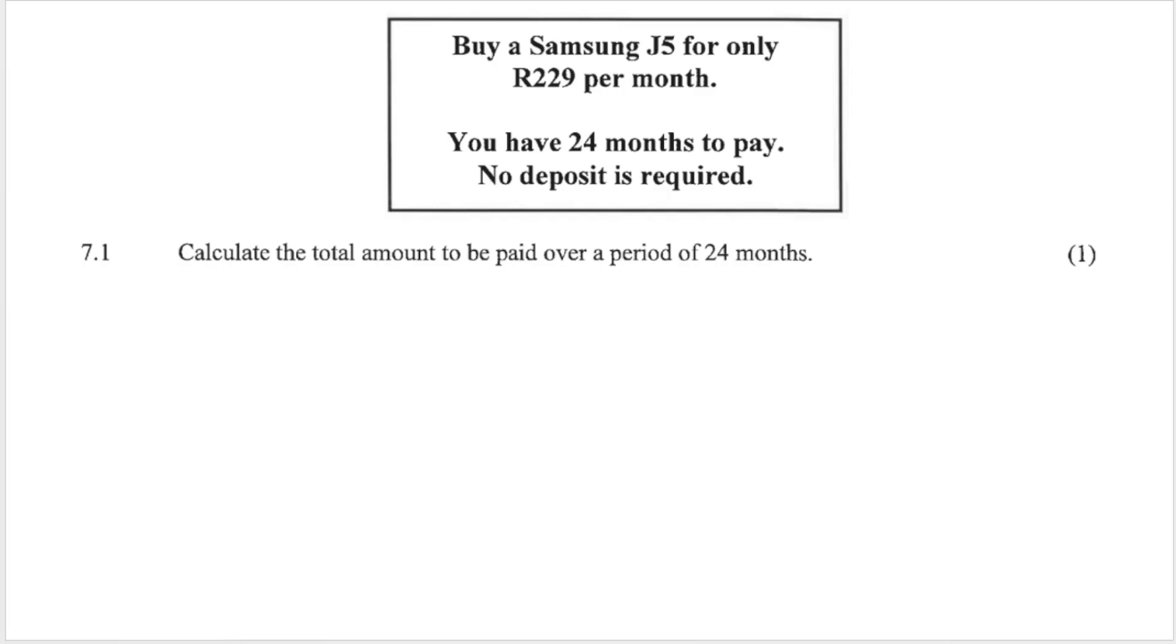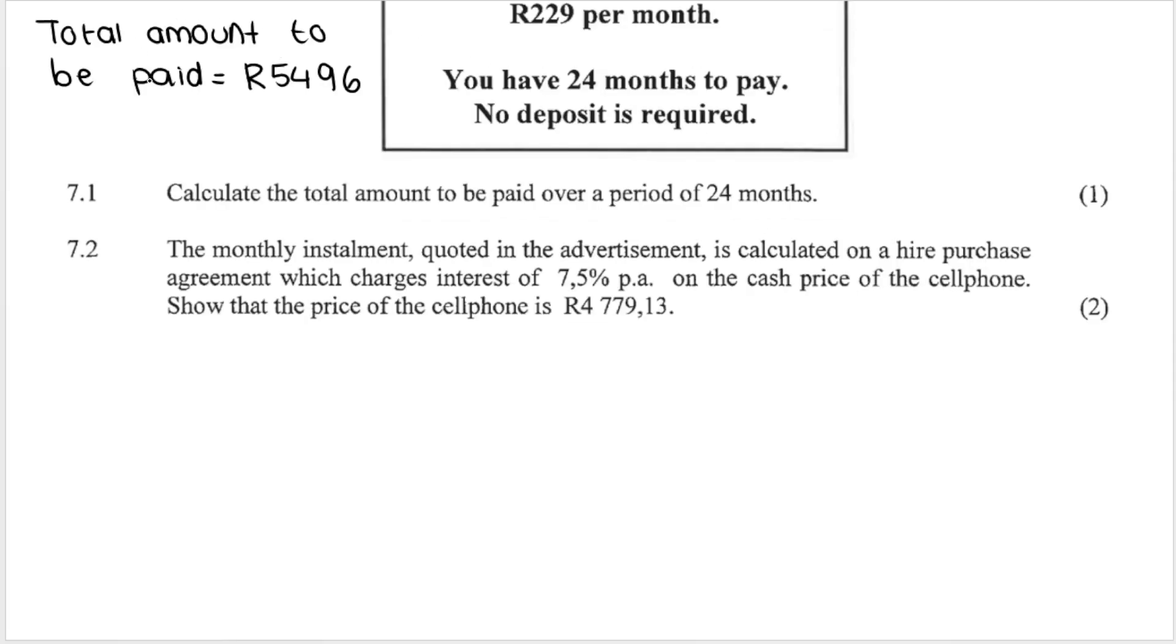So the question says that we can buy a Samsung J5, a cell phone for only R229 per month. So this is what we will be paying every single month for the cell phone. We have 24 months to pay. No deposit is required. First question is very, very simple. It's only worth one mark. Calculate the total amount to be paid over the 24 month period. So we pay 229 for one month and we have 24 months in total. So times 24 and we get a total value of R5,496.